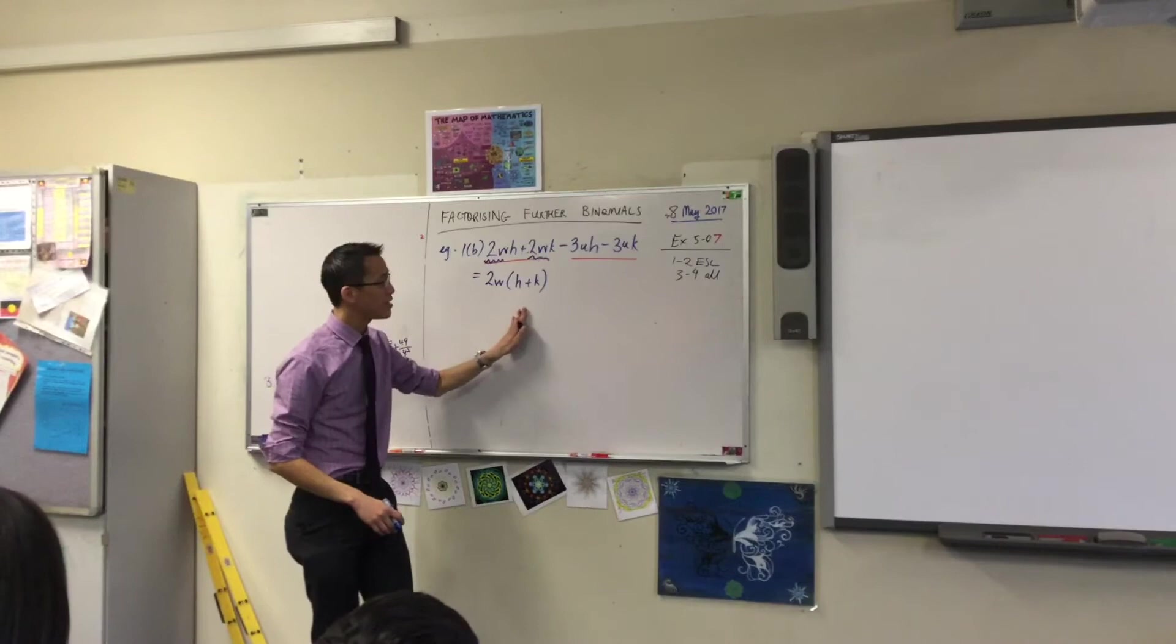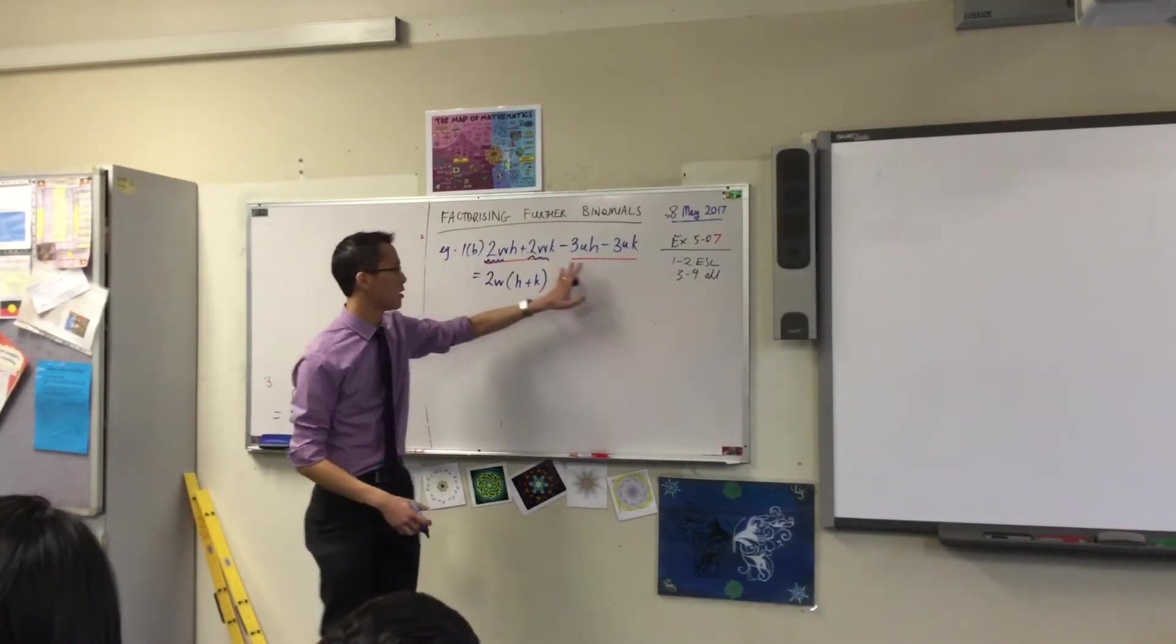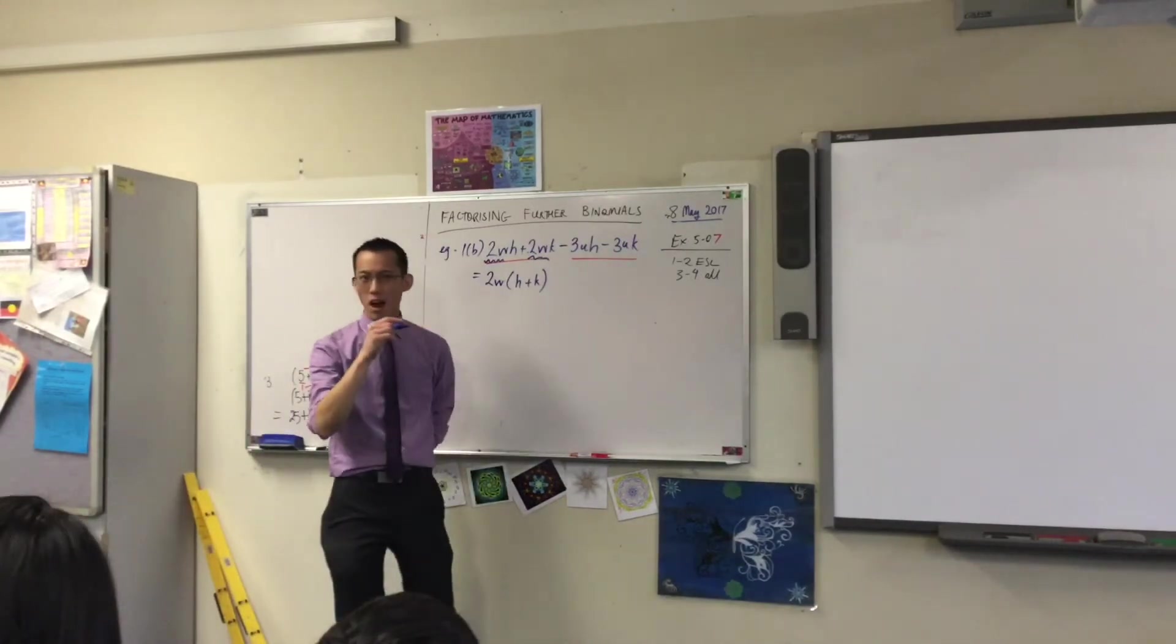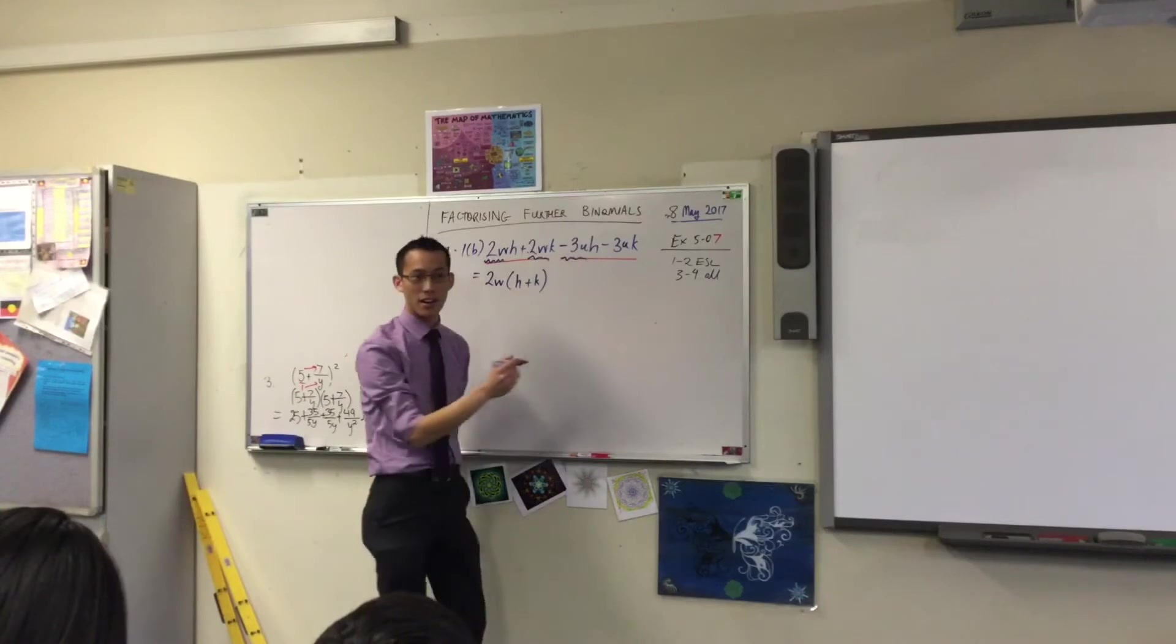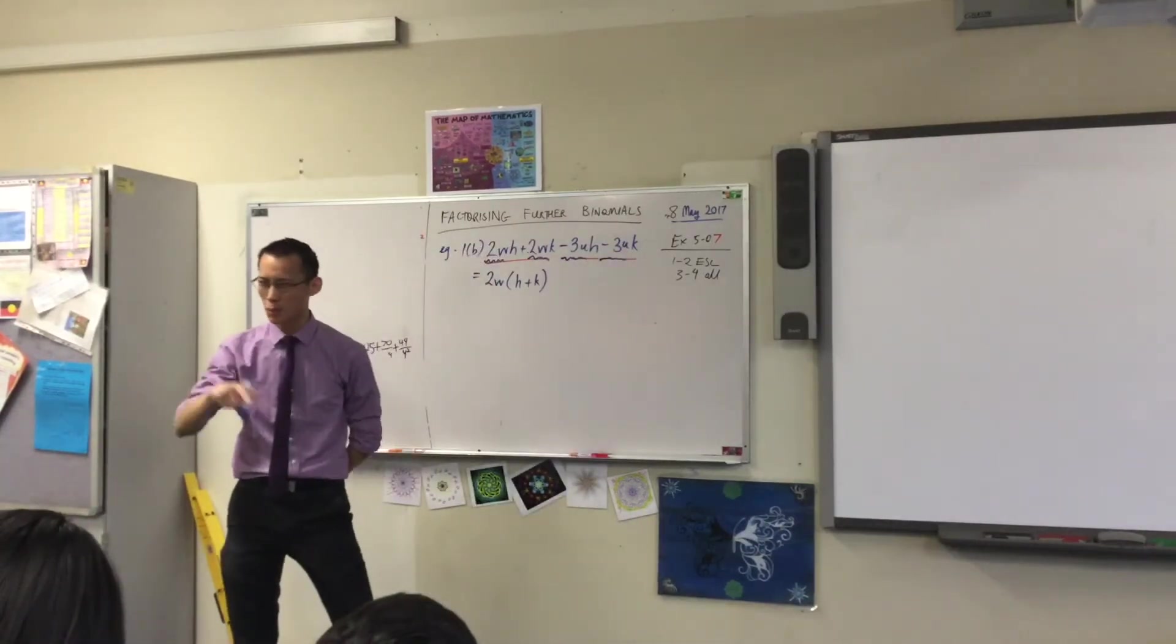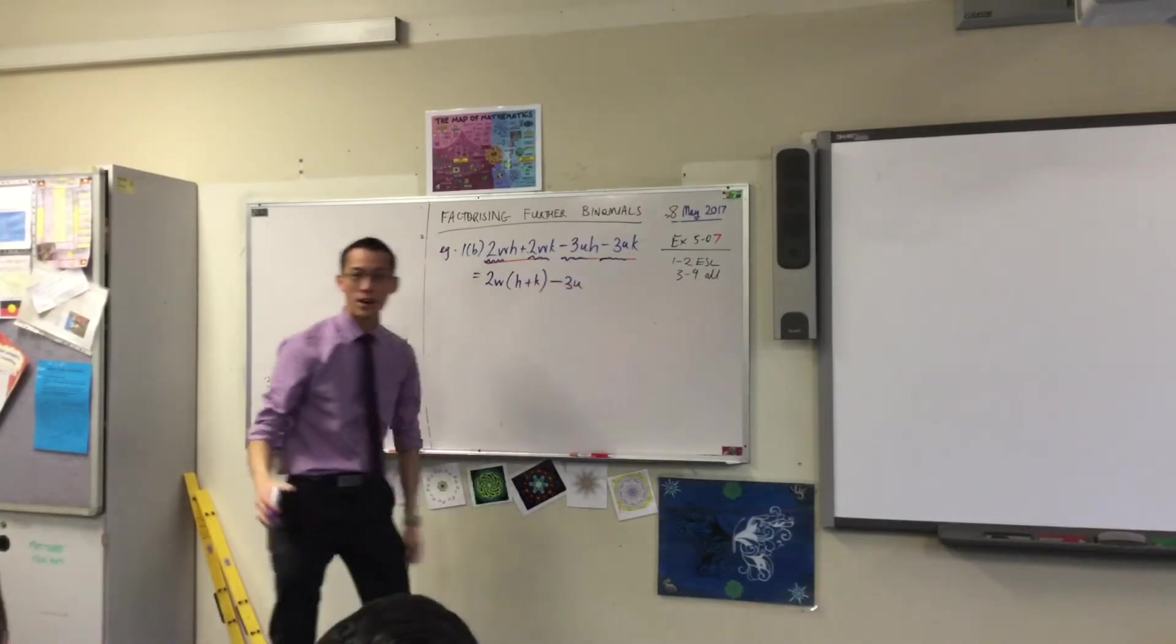One of the ways you'll know that you've done this right is that when you go to your second pair, you very likely will see something similar. What's in common? Minus three U. I can see there's a minus three U here and a minus three U there. Again, remember, watch out for the sign. So I'm going to take minus three U out of each.